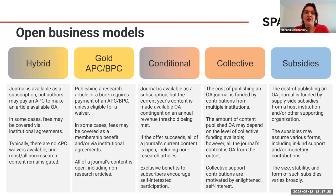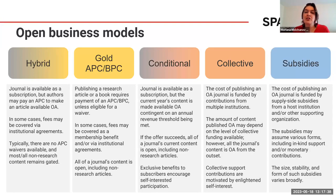The next model is gold, with APCs or BPCs — article processing charges or book processing charges. Publishing an article or book requires payment of an APC or BPC unless you are eligible for a waiver. Sometimes fees can be covered as part of a membership or an institutional agreement. Usually the entire journal content is open, even the non-research articles.